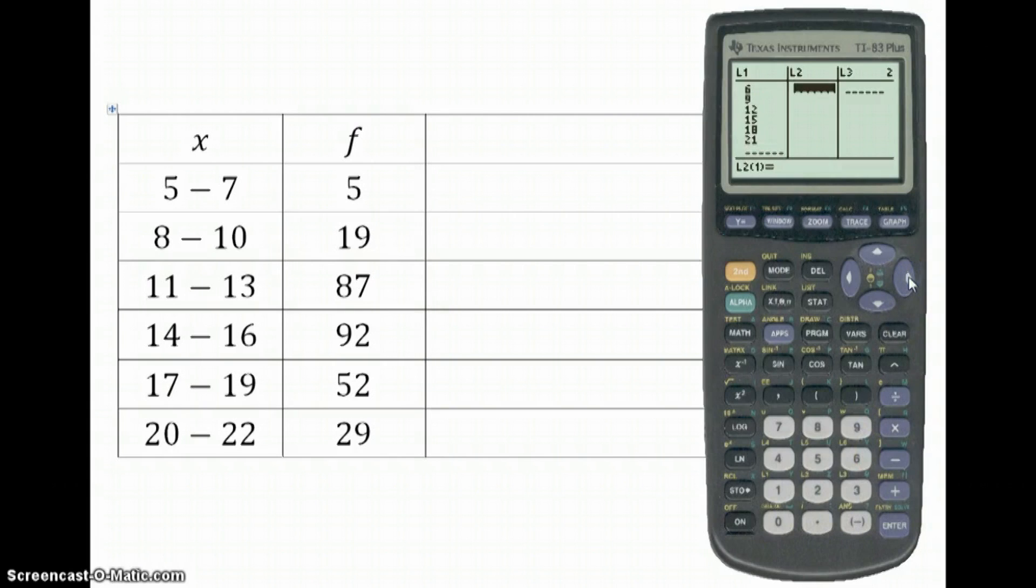Now press right to go into list 2. And now we're going to write in the frequencies. So we've got 5. Then 19. Then 87. Then 92. Then 52. Then 29. And that's it. Press enter.